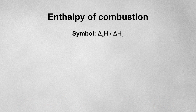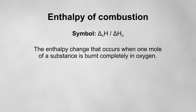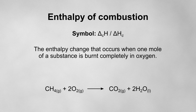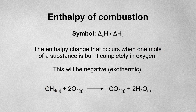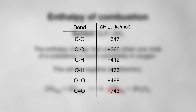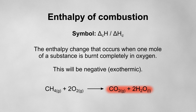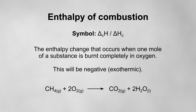The enthalpy of combustion is the enthalpy change that occurs when one mole of a substance is burnt completely in oxygen. For example, this equation shows the complete combustion of methane — notice we're combusting a single mole of methane, no more, no less. The enthalpy of combustion is always negative because burning things in oxygen is always exothermic — that's why fire is always hot. The bond enthalpies for bonds in carbon dioxide and water are greater than those in organic molecules and O₂, so more energy is always released forming combustion products than is put in to break reactant bonds.